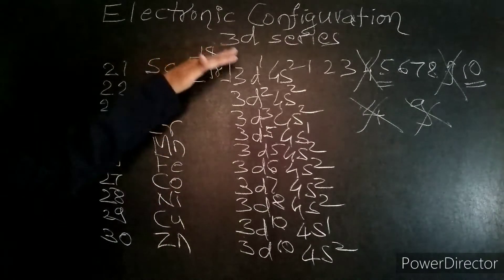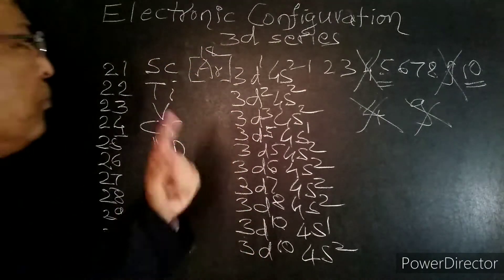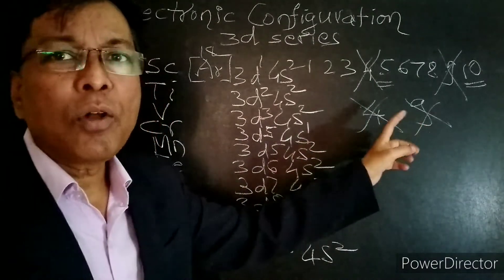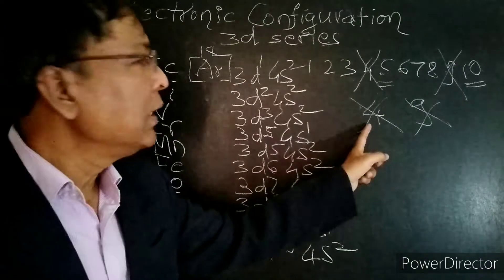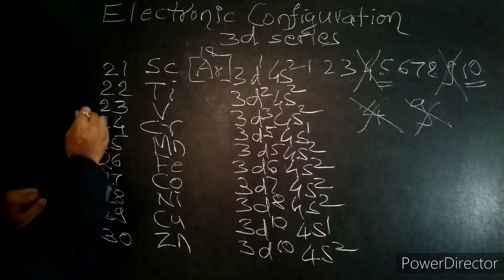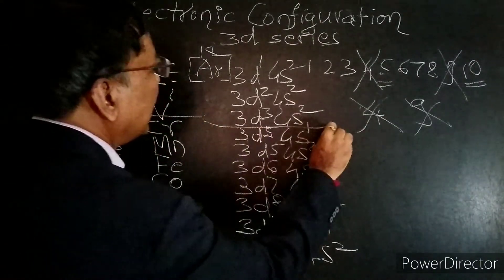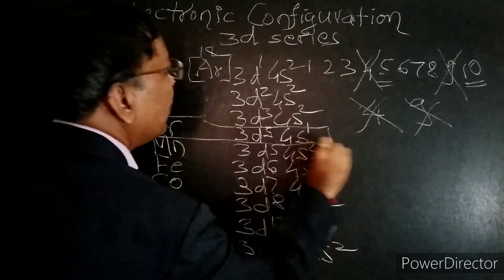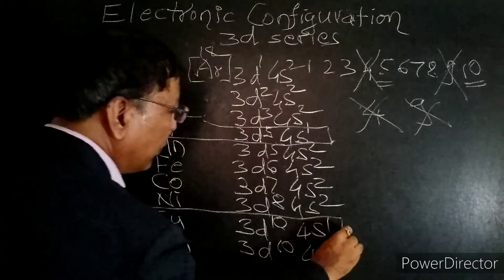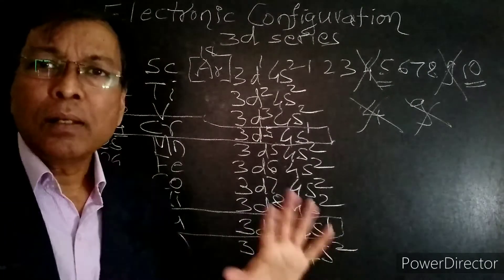To summarize the 3D series electronic configuration trick: neglect 4 and 9. Instead of 4, take D5; instead of D9, take D10. Chromium's electronic configuration is [Ar] 3d5 4s1, and Copper's electronic configuration is [Ar] 3d10 4s1.